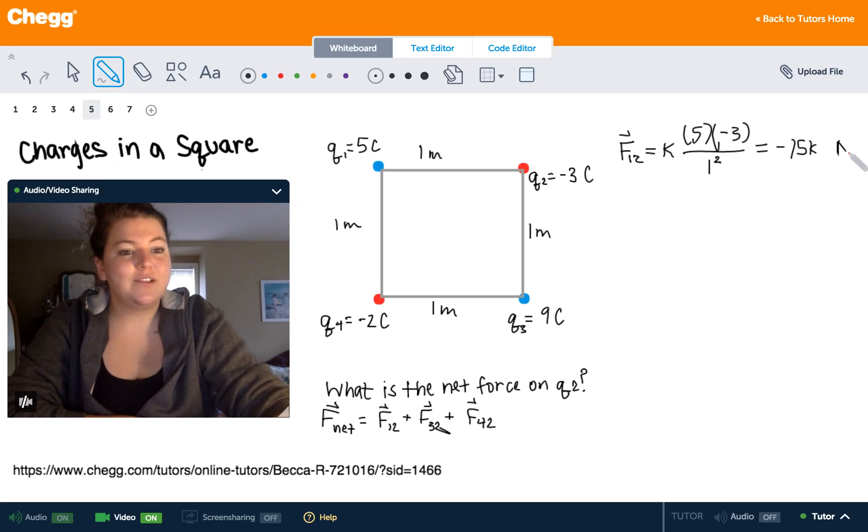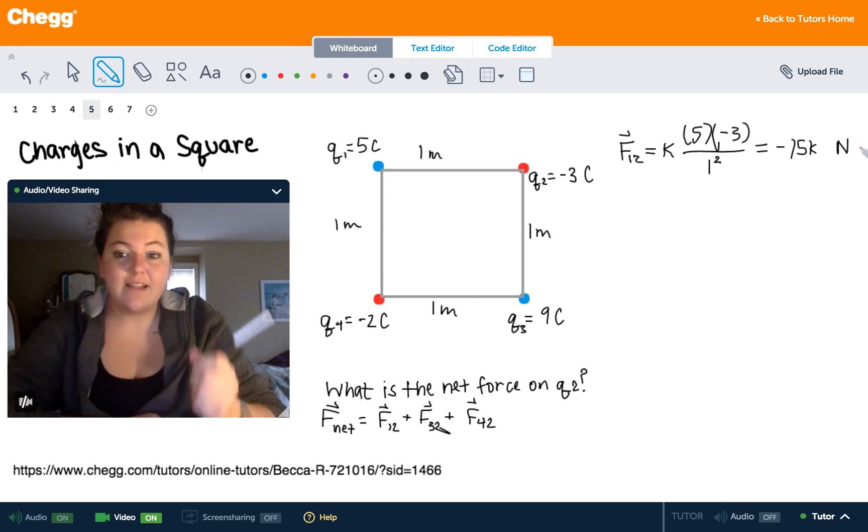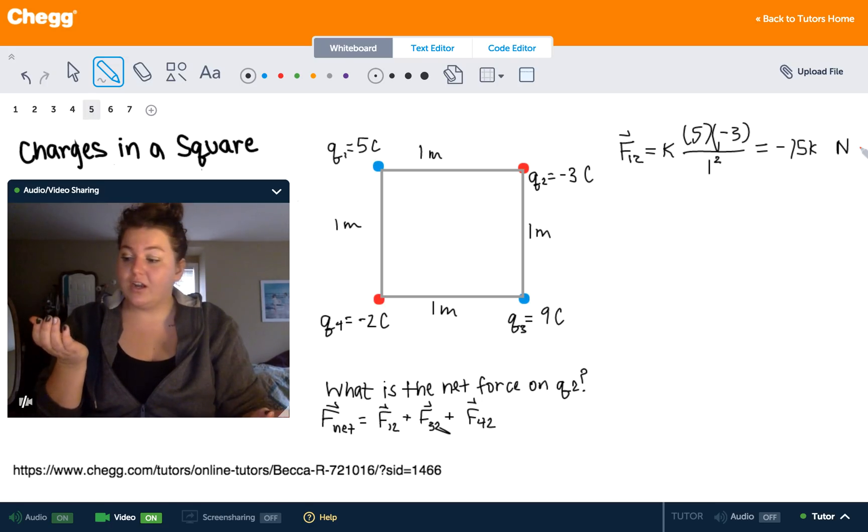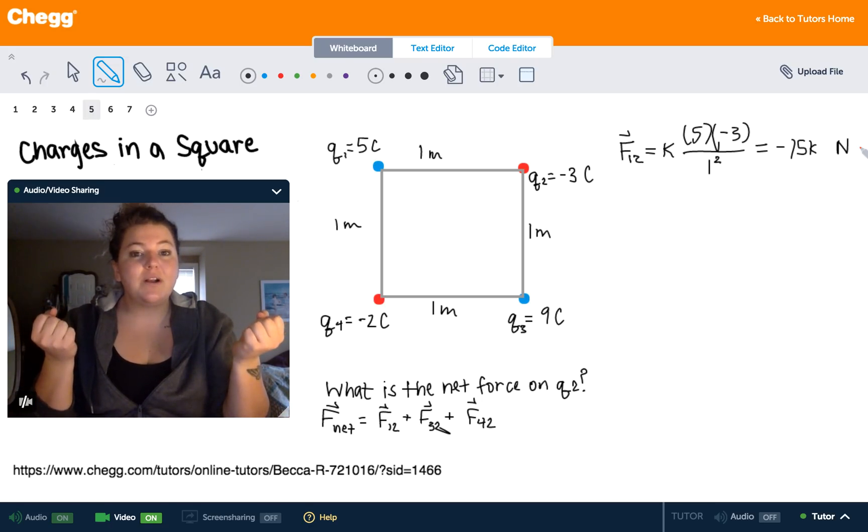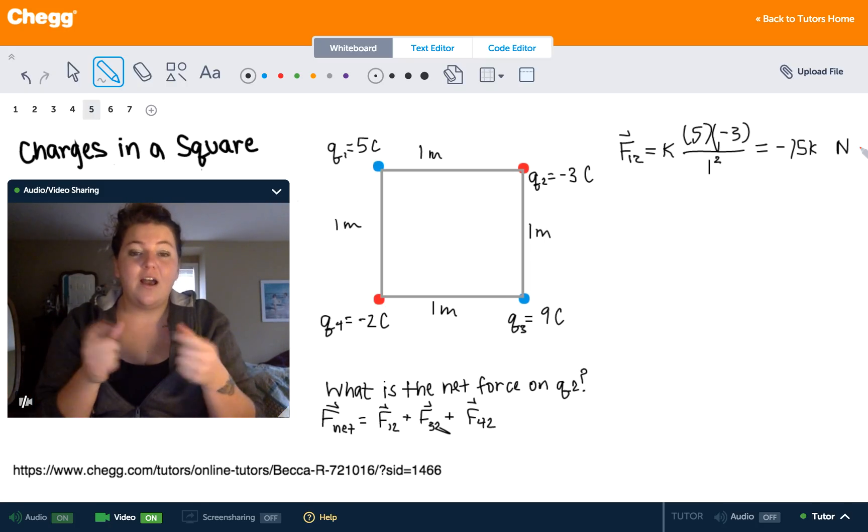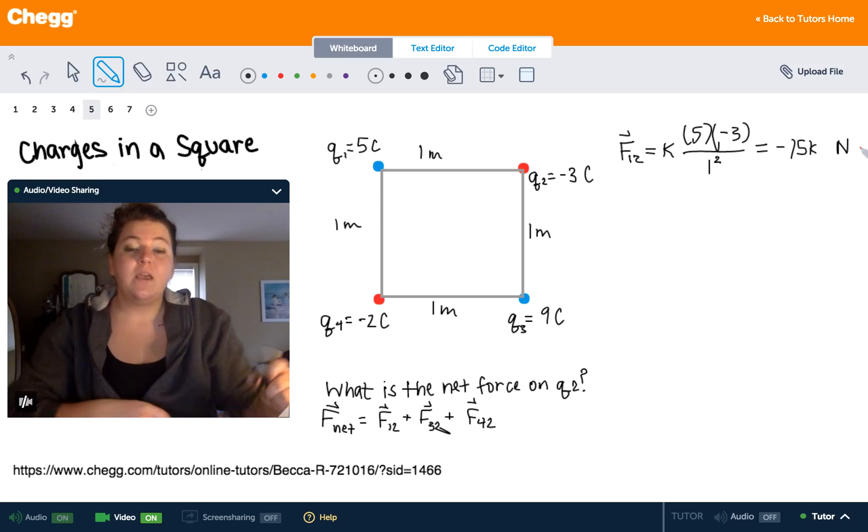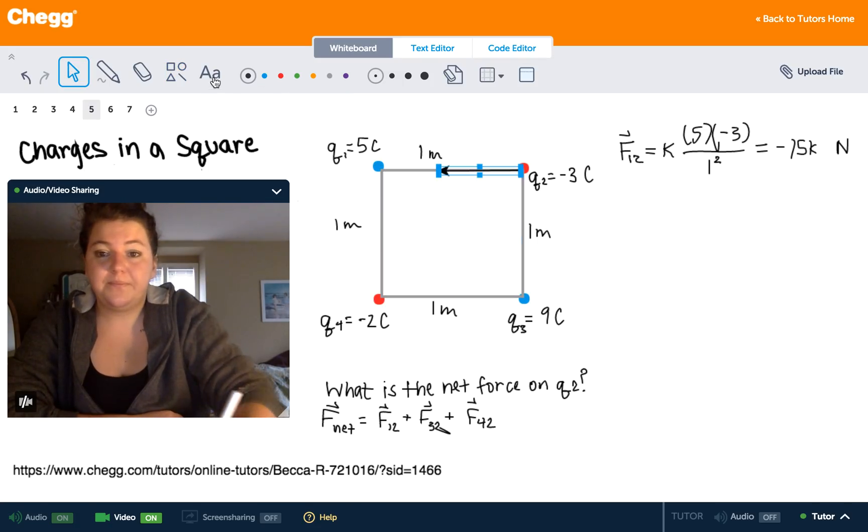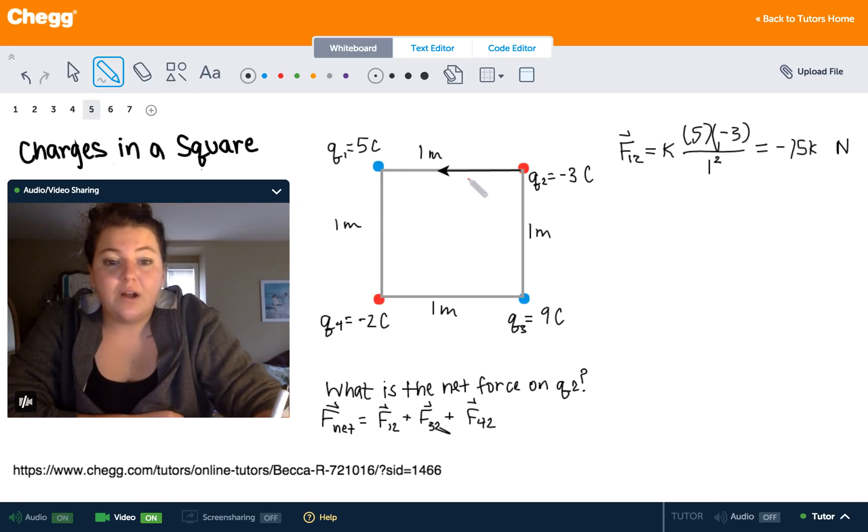So that ends up giving us negative 15k. And our unit of force is newtons. Now notice that there's a negative sign on that force. That does not mean that there's a negative amount of force being applied. But what it means is it gives the force a direction. Notice that you have a positive charge and a negative charge over there. And remember that opposites attract. So the negative actually says that we have an attractive force effectively pulling those two charges together. So what that's going to mean is that our force vector is going to be in the direction of that first charge right there. And it's going to have a magnitude of 15k newtons.